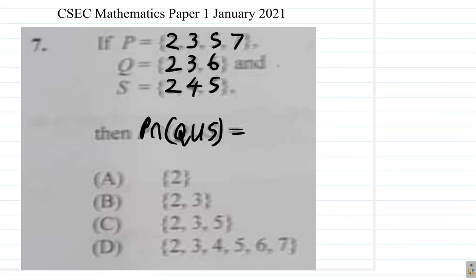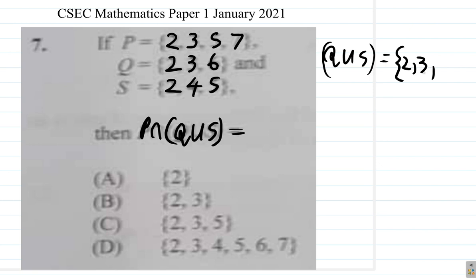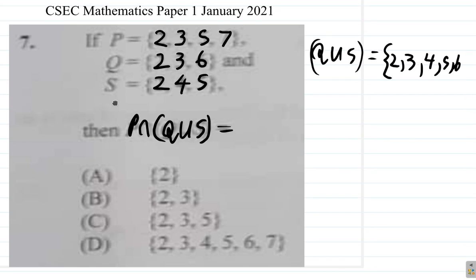First, do what is in the bracket first: Q union S. Q union S is equal to — remember, union includes what is in one alone, or the other alone, or both. So we have 2, 3, 4, 5, 6. Those are all the numbers in the union.